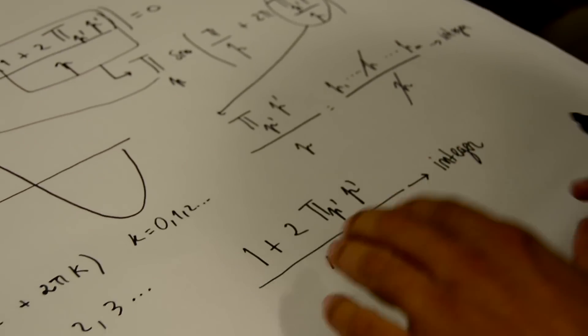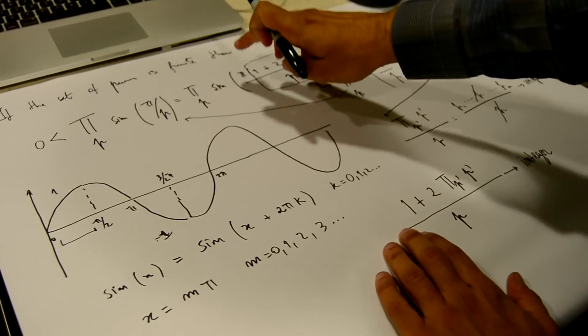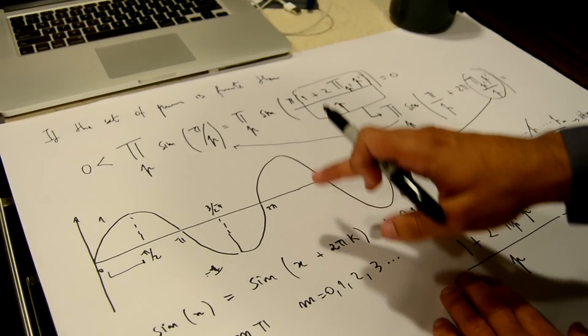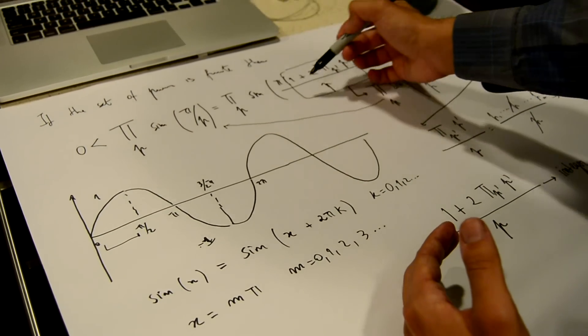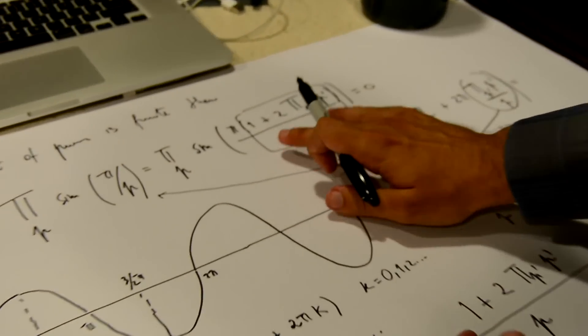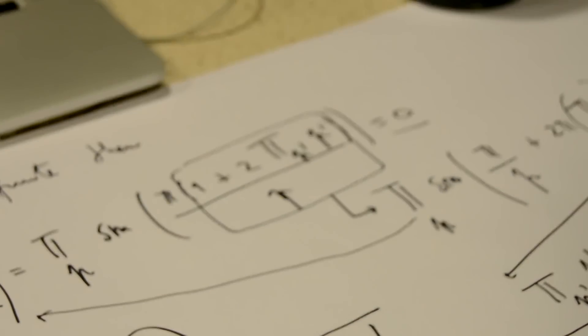And so, since this is going to be an integer, an integer times π is going to be one of the zeros of the sine function. So this result, the product, if one of the terms is a zero, the product is going to be zero. And we finally got to the contradiction that we wanted.